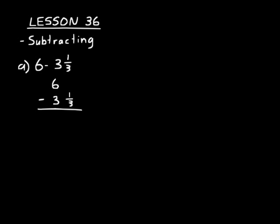So we could take 1 away from 6 and make that a 5. And we know that 1 would be 3 thirds. Remember we have to have a common denominator for subtracting fractions. So now we can subtract 3 thirds and 1 third. 3 thirds minus 1 third would just be 2 thirds. And now let's subtract the whole numbers. 5 minus 3 is 2.